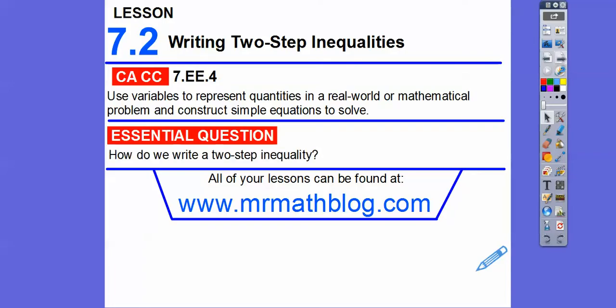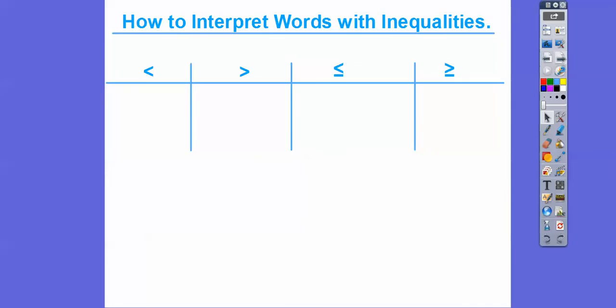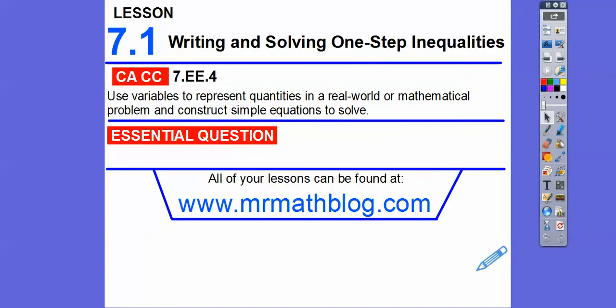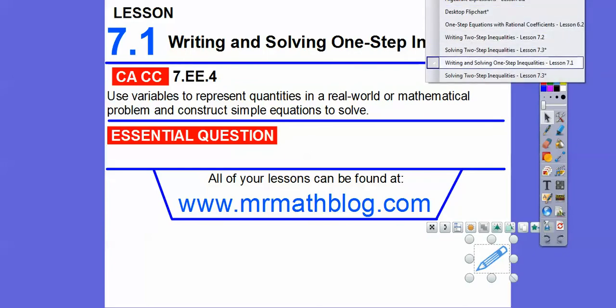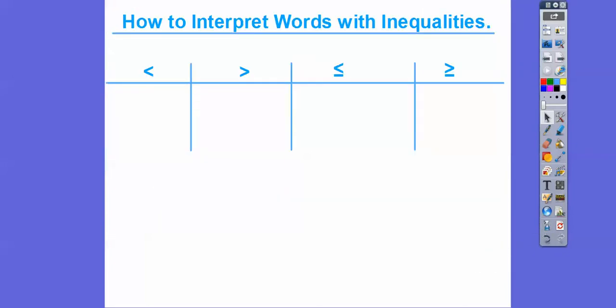Here's our common core strand. So very similar. How do we write a two-step inequality? So here's how to interpret words with inequalities. We're going to see several examples. We're going to see phrases that involve less than or greater than. This is less than or equal to or greater than or equal to. Let's start over here. Less than.